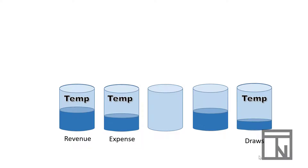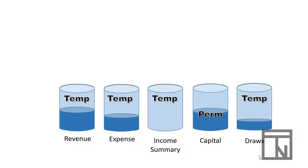Each of them have their balances emptied into capital, so capital is also represented. Then we have one extra glass — this empty glass is known as Income Summary. This is a temporary account that remains at a zero balance most of the year and is only used during the closing process.